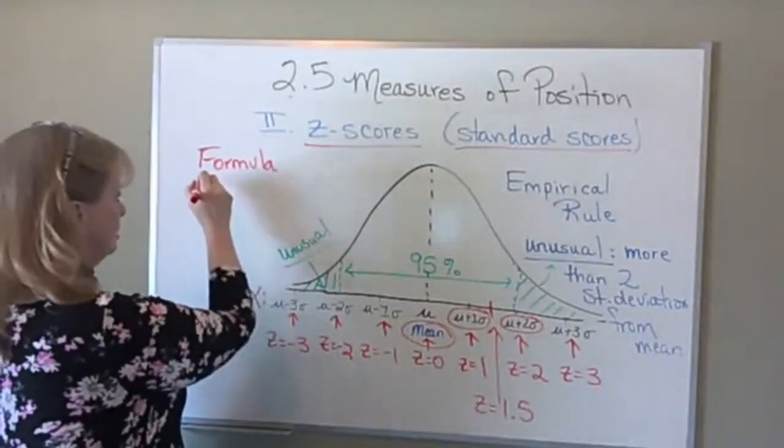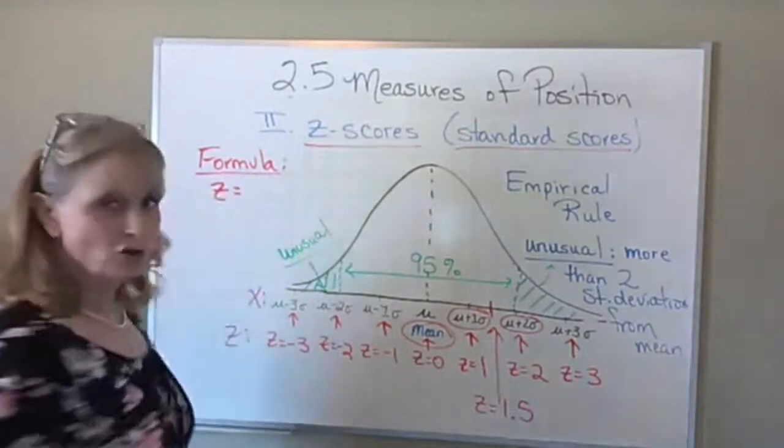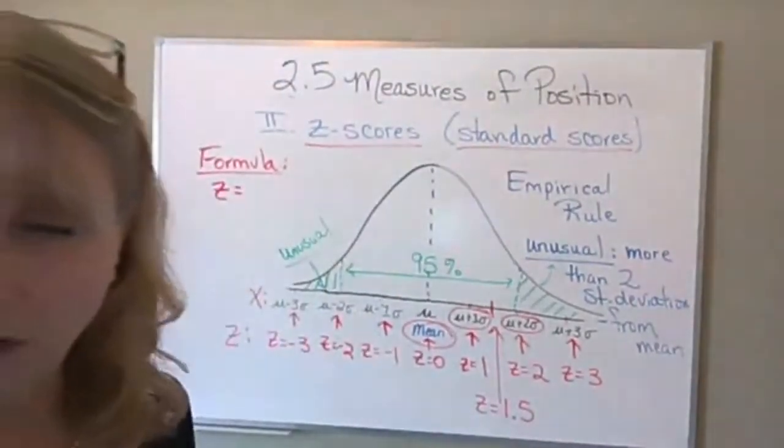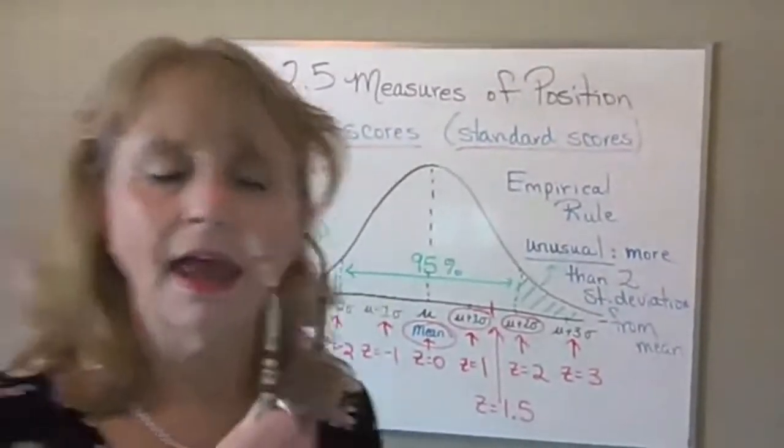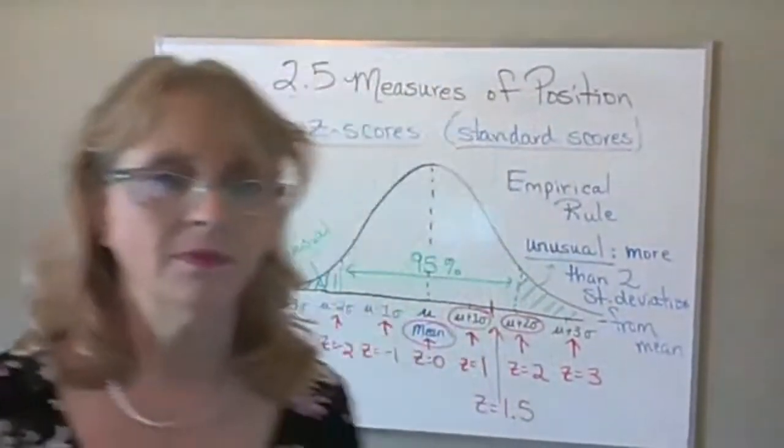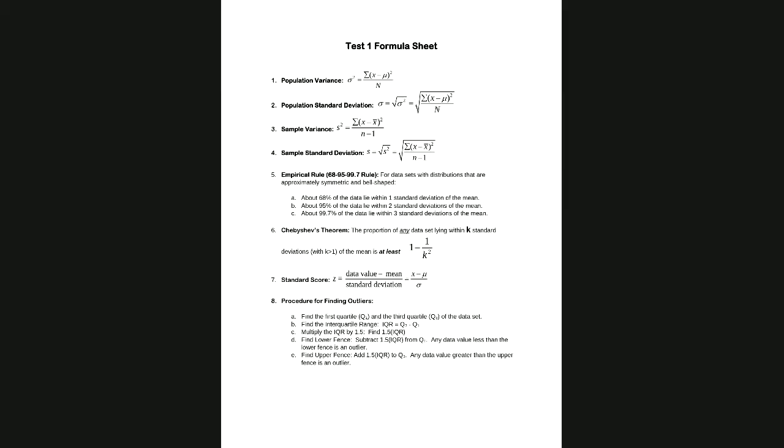We have a formula to find z-scores, and that formula is on your formula sheet — it's number seven. It's written both in words and with a formula. With the z-score formula, you start with the data value and subtract the mean — that gives you the distance from the mean — and then when you divide by the standard deviation, that tells you how many standard deviations it is from the mean. So a z-score really is the number of standard deviations from the mean.